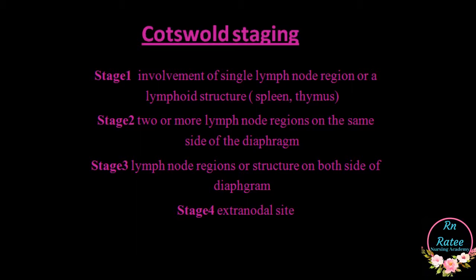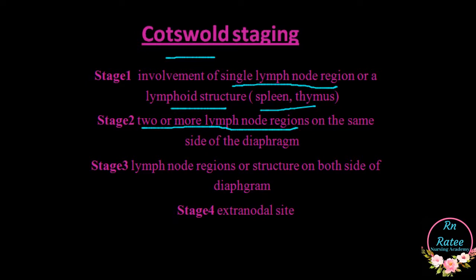In staging, Cotswold Staging is used. Stage 1 shows involvement of a single lymph node region or lymphoid structure such as spleen or thymus. Stage 2 involves two or more lymph node regions on the same side of the diaphragm.